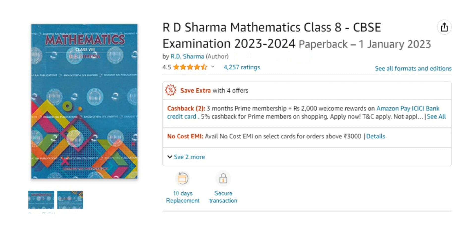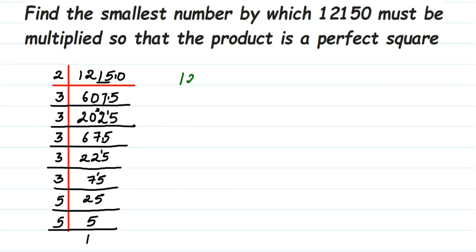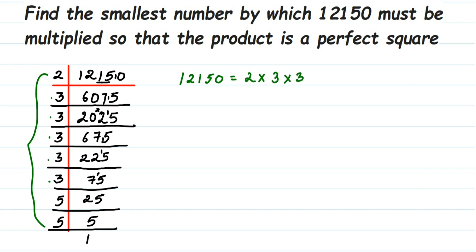Now we're going to rewrite all the prime factors we got. So 12150 is equal to 2 × 3 × 3 × 3 × 3 × 3 × 5 × 5 — that's one 2, five 3s, and two 5s.